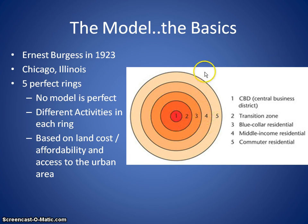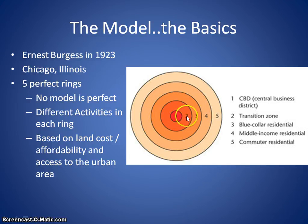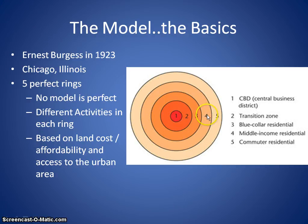Moving out to circle four, in today's terms these would be areas more like our suburbs. These are going to be your middle classes, and typically people who have transitioned from ring two or three are looking to get out to ring four into these middle-income areas of single-family housing and more space. People here have the ability to own a car or perhaps take public transit into work, and they can afford to live in these areas to get larger houses and more personal space.